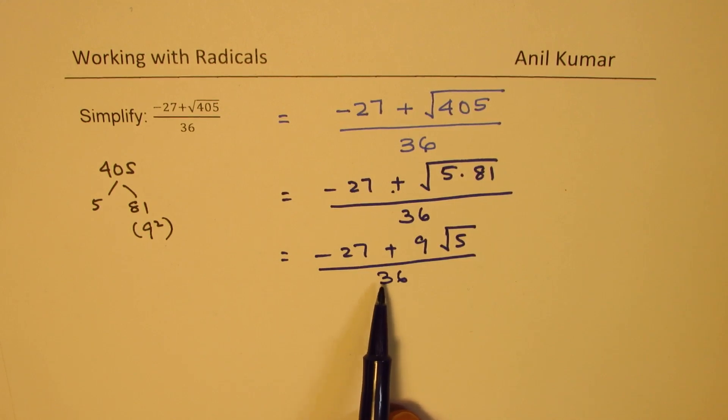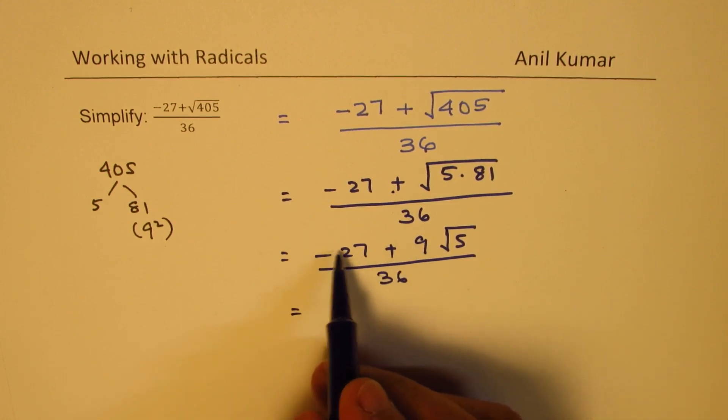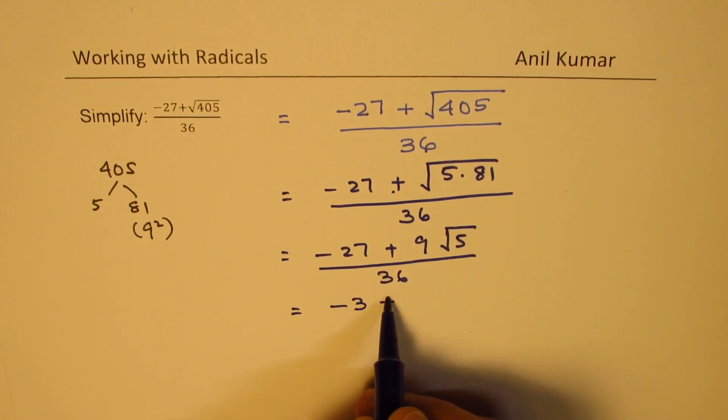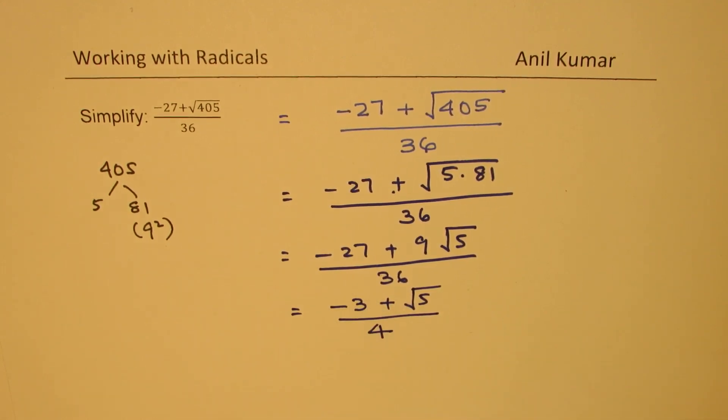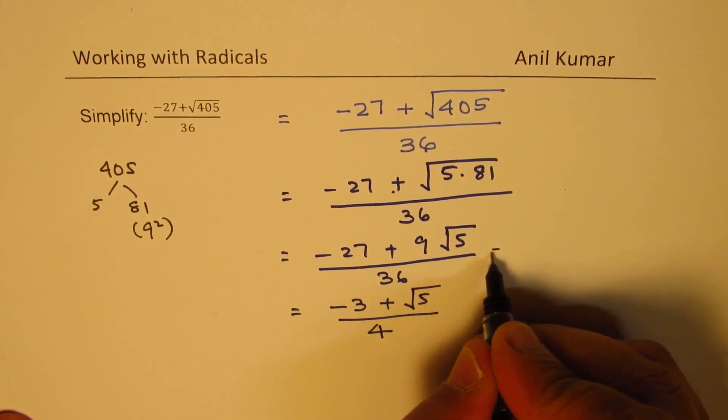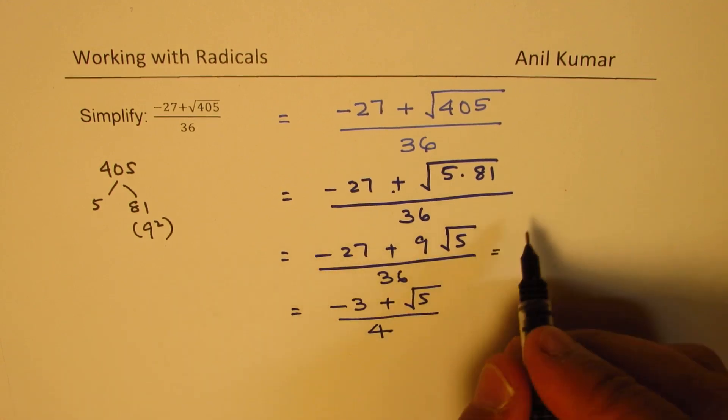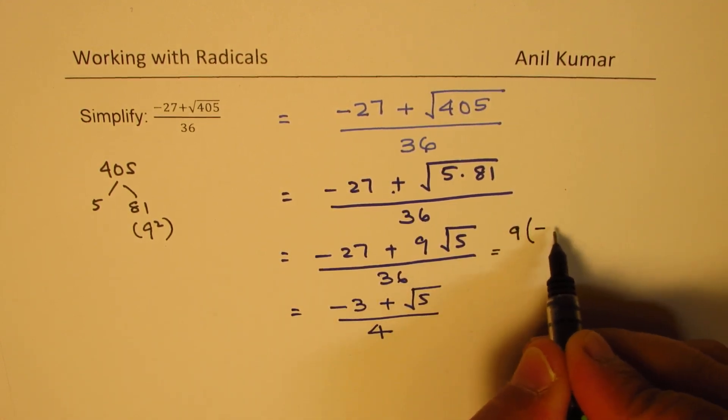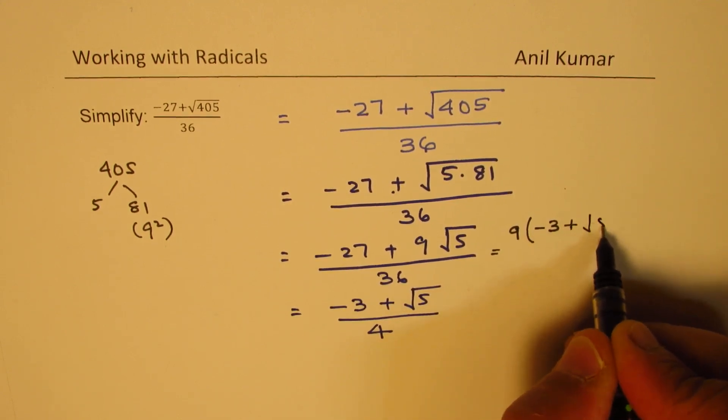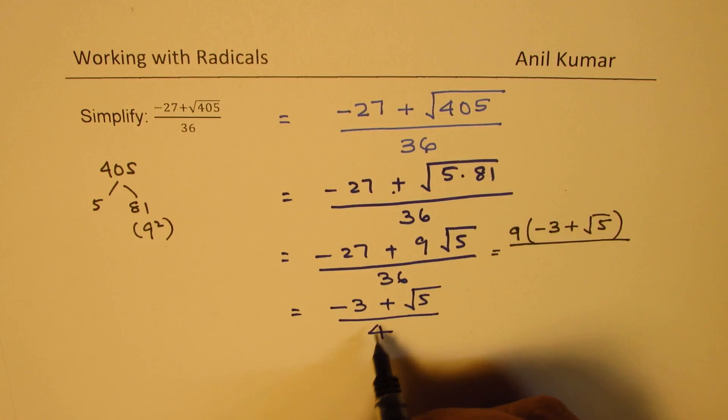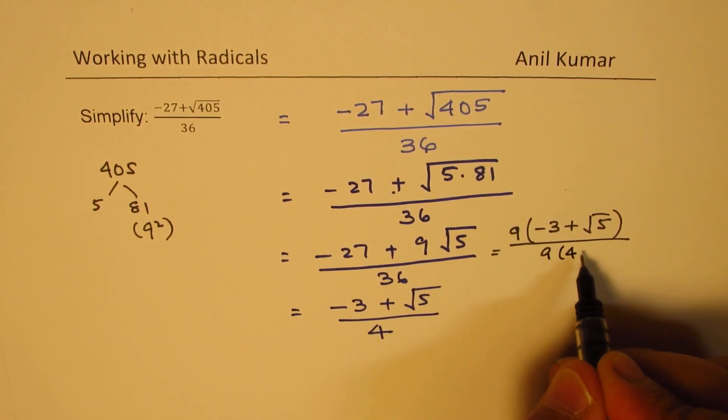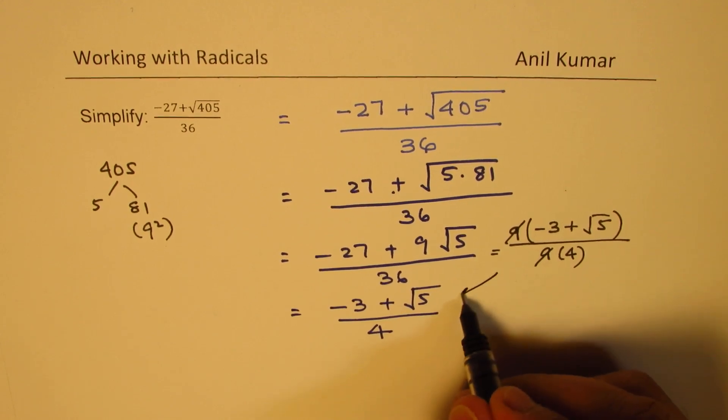Now as you can see, 27, 9, and 36 have a factor of 9 common. So you could write, you could divide all the 3 by 9. So 9 times 3 is 27. So we get -3 + √5 and dividing this by 9, we get 4. So that becomes the equivalent expression. Perfect. So I hope this step is clear. What we did was, here we took 9 as a common factor. Think like this. 9 is a common factor. So we get -3 + √5. And the denominator, it is 36, which is 9 times 4. So 9 and 9 cancel and we get our result as shown here.